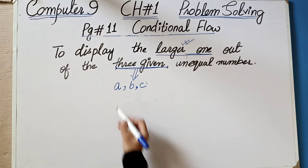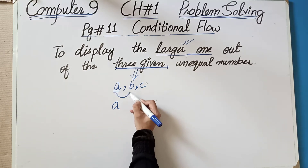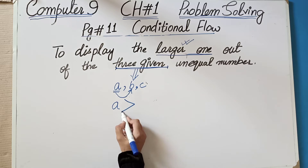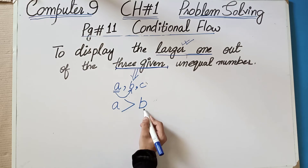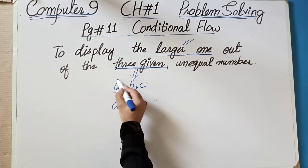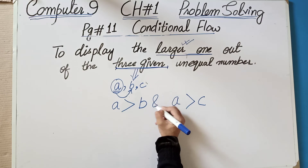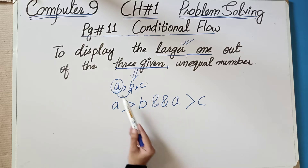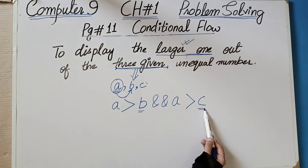First we suppose three numbers A, B and C. We compare: if A is greater than B, and if A is also greater than C, then A is the largest number.